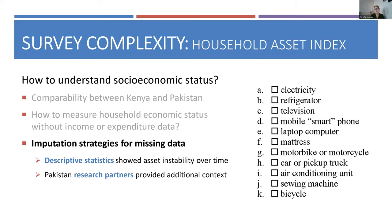Before joining the project, I came from an education research background only in the United States. My first assumption was that some of these assets might be good candidates for backward imputation — items that are stable over time, like birth year. But before deciding on a strategy, I looked at the data descriptively to test that assumption. It turned out to be false. Even something like electricity — which we'd expect to be stable for applicants to top universities — showed around 20% of students gaining or losing electricity over time. Our research partners explained that in some neighborhoods in Karachi, there are scheduled times without electricity, which influenced this instability.